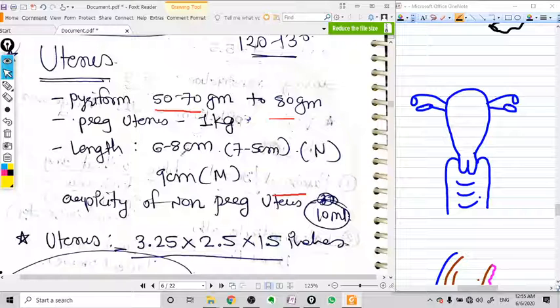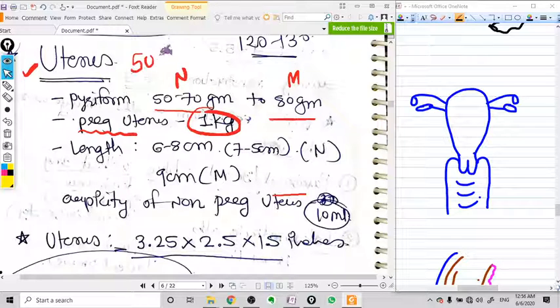Let's talk about the uterus. Uterus is a pyriform shape organ that is 50 to 70 grams, up to 80 grams. 50 to 70 grams happens in case of nulliparous women. In case of multiparous women it goes to 80 grams. But the pregnant uterus weight is one kilogram.